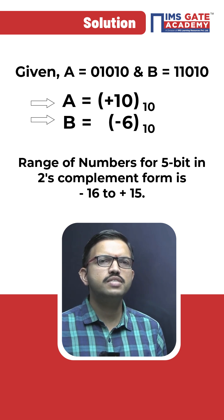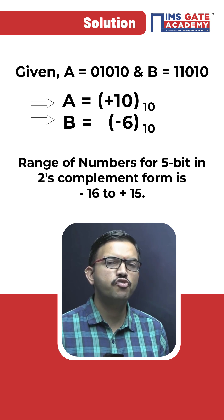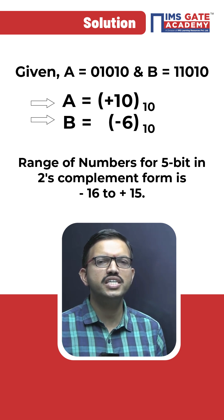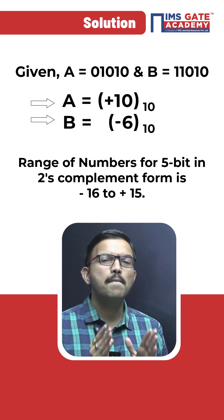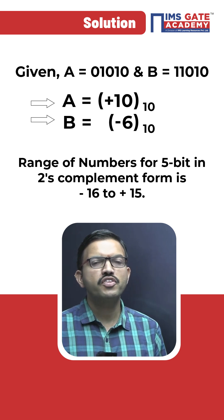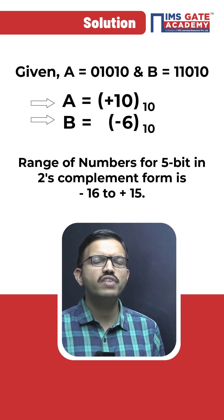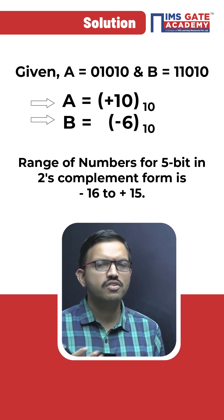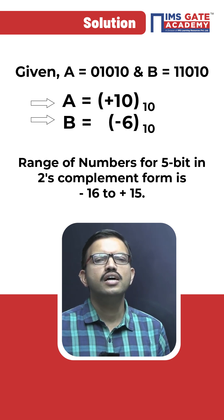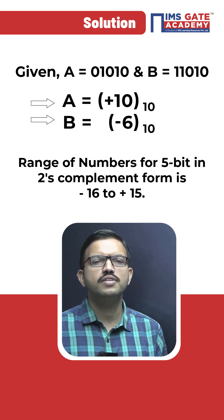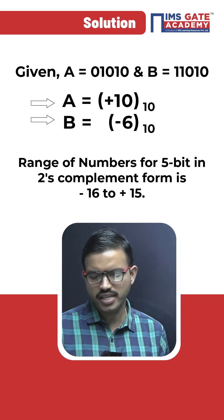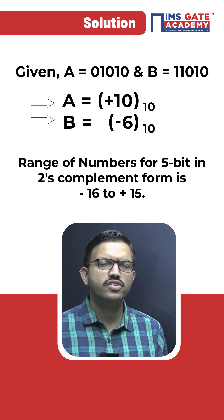You are getting the corresponding decimal equivalent for A as +10 and for B as -6. With respect to 5 bits in two's complement representation, the corresponding range is -16 to +15. Within this range, including -16 and +15, if you are getting any of these values, that means 5 bits are more than sufficient and overflow won't occur. But if it exceeds the range on either side, then overflow occurs. With this logic, give it a try and cross-verify whether your answer is correct.